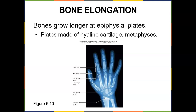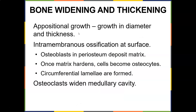Appositional growth is growth in diameter and thickness. Once you stop growing taller, you grow thicker through intramembranous ossification at the surface: osteoblasts in the periosteum deposit matrix, the matrix hardens, cells become osteocytes, and circumferential lamellae are formed.